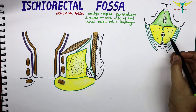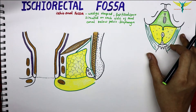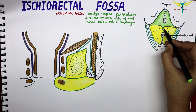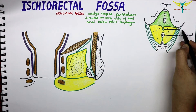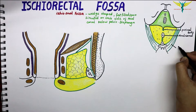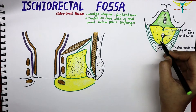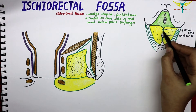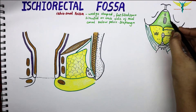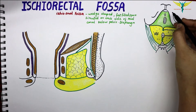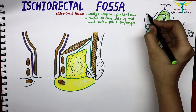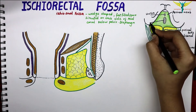Let's see the surface view of the ischiorectal fossa. This is the anal canal, the perineal body, the sacrotuberous ligament, and this yellow-colored fat-filled space is the ischiorectal fossa. This green color is the perineal membrane, this is the urethra, and the vagina.